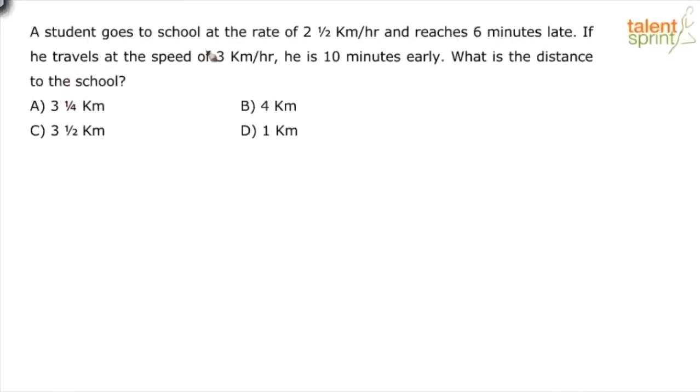The shortcut formula will be helpful here, but you have to be good in calculation. There is a regular method of solving this question where we can assume the first case where he reached 6 minutes late, the time taken is t+6. In the second case where he reached 10 minutes early, the time taken is t-10. But instead of doing all that, just look at the shortcut formula.